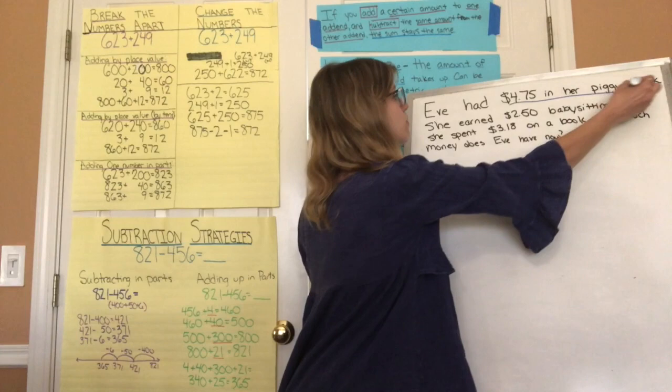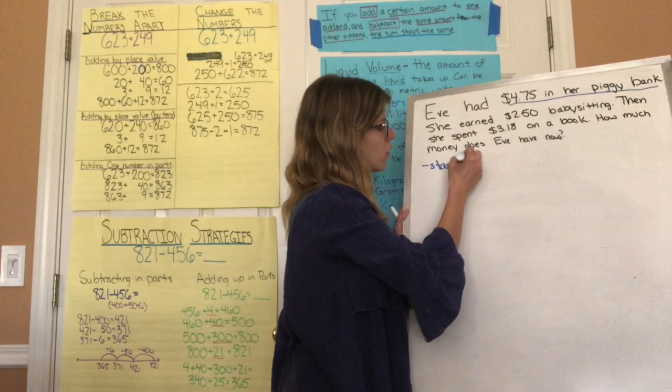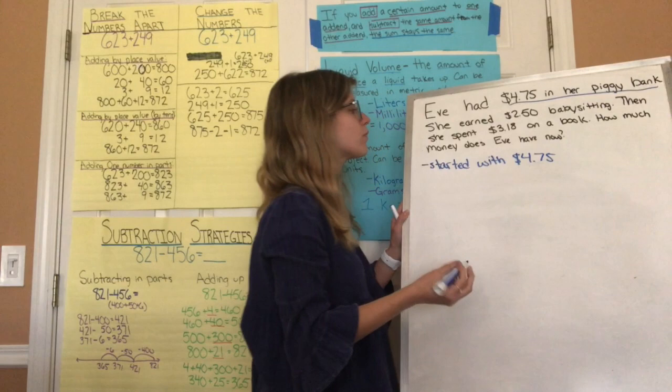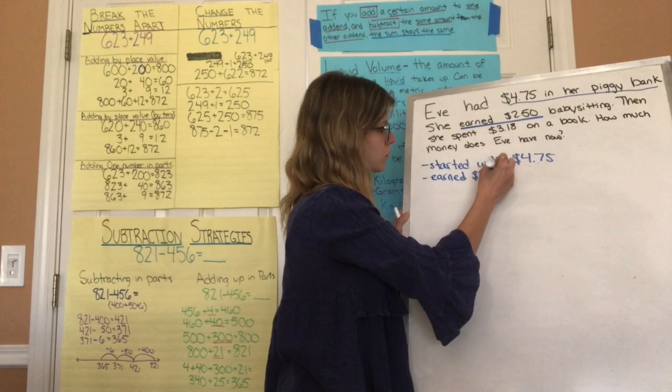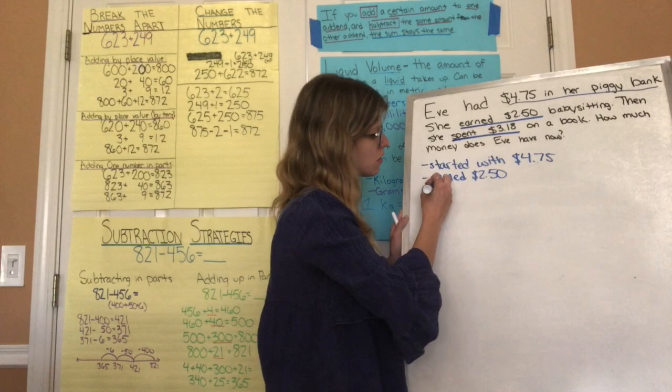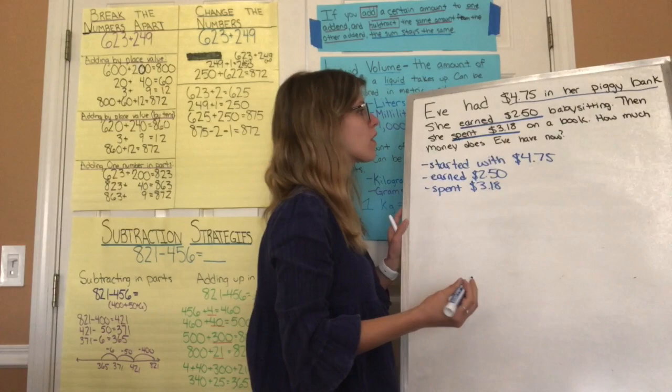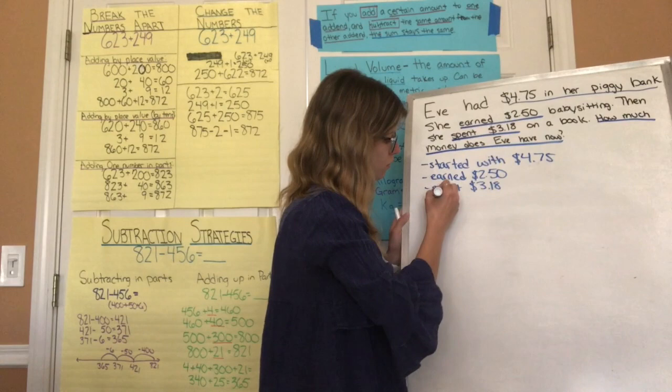If I was to take notes of this, I see that Eve had four dollars and seventy-five cents in her piggy bank, so she started with four dollars and seventy-five cents. Then she earned two dollars and fifty cents babysitting. Then she spent three dollars and eighteen cents on a book. The question is: how much money does Eve have now?